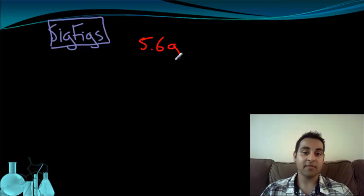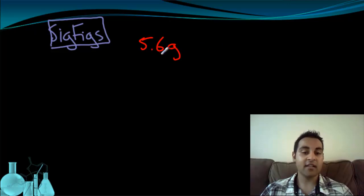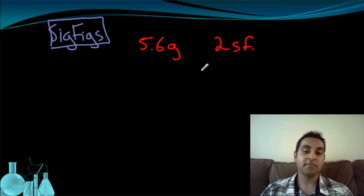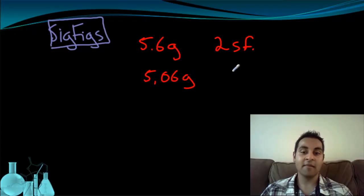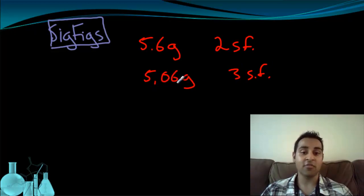Let's look at a sequence of measurements and identify the number of significant figures. Our first number is 5.6 grams. Both of these digits tell us something about the measurement — we know that it's 5 grams and we know that it's .6. So these are two significant figures. Now let's throw in another digit: 5.06 grams. The 5 and the 6 both tell us relevant information, and the 0 is important for placing the 6 in the right spot. So this is three significant figures — all three digits are significant.